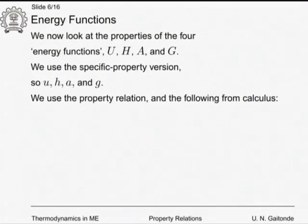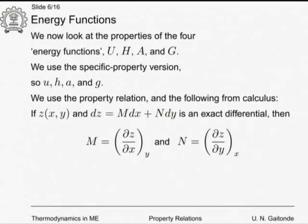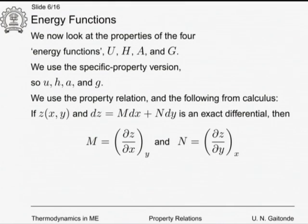We will use the property relation and the following key characteristic: if z is some function of x, y and dz = M dx + N dy and it is an exact differential, then M and N can be represented as partial derivatives of z with respect to x and y. Since a property is a function of state — an analytic function of other properties — differentials of properties will be exact differentials.